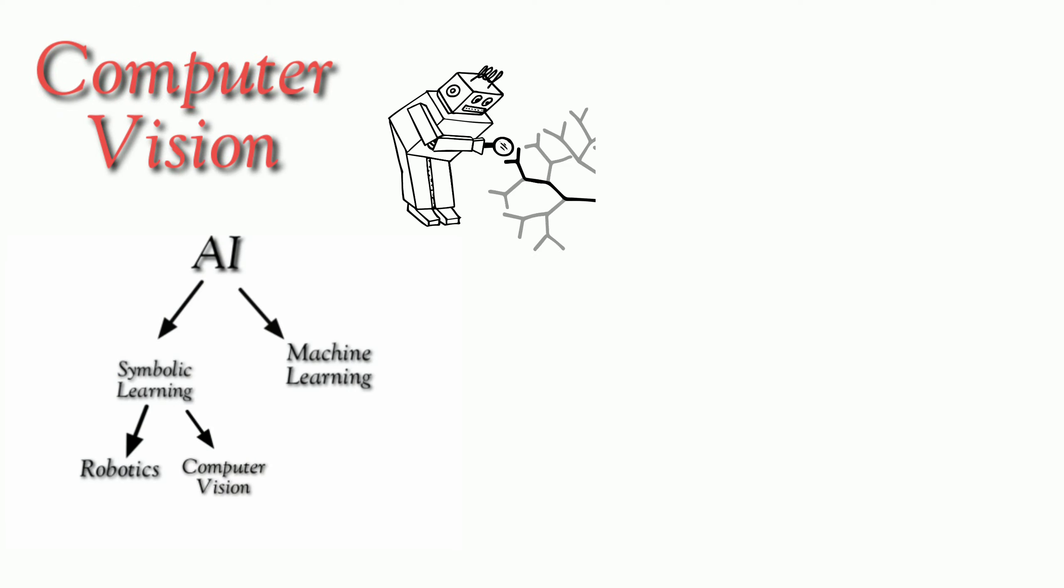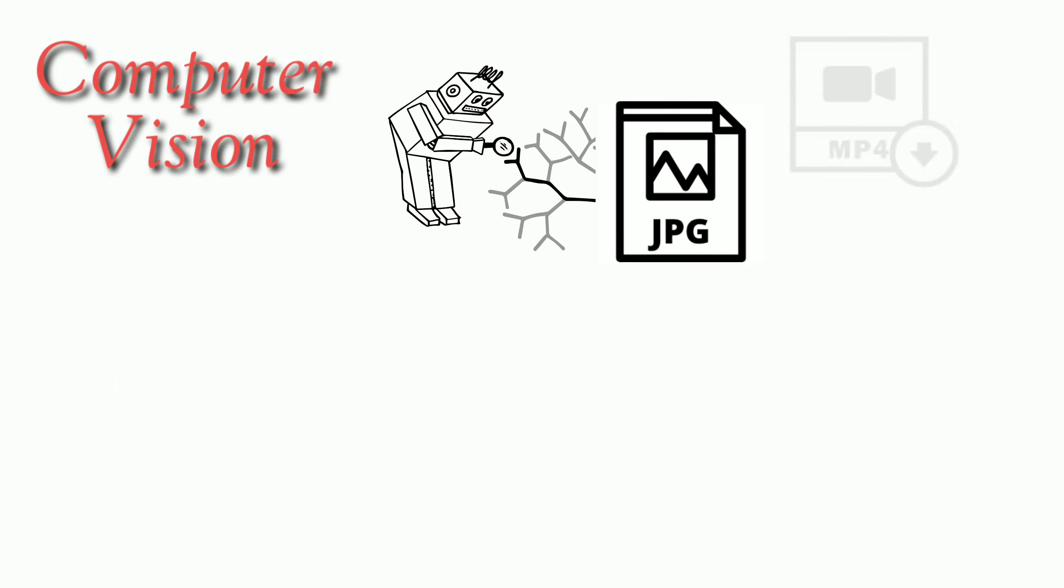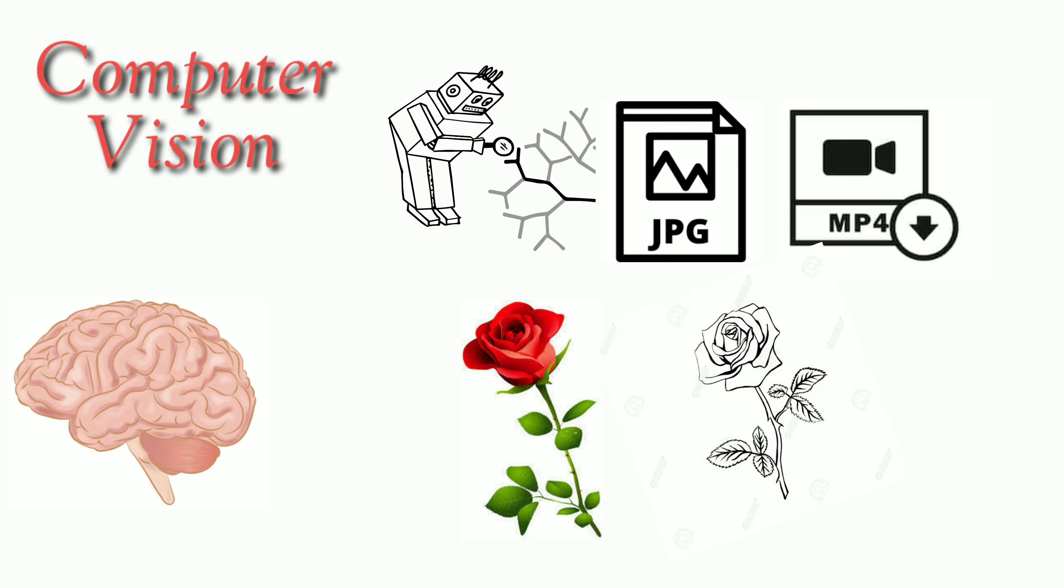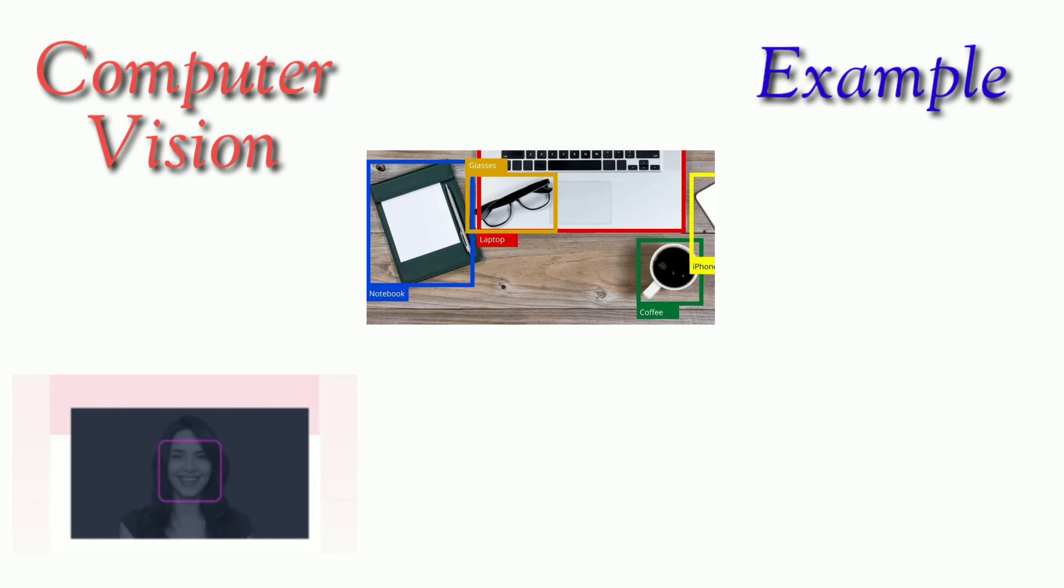Computer Vision focuses on extracting information from input images or videos just like the human brain does. For example, when a human brain sees a flower, it tries to extract information such as its shape, color, etc. Examples of computer vision are face detection, object detection, handwriting detection.